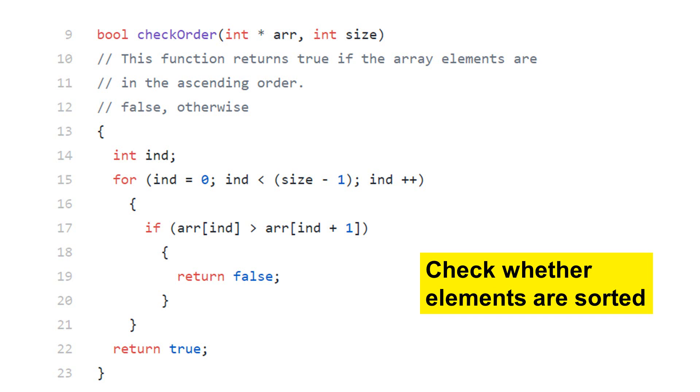By using greater than, this function allows two adjacent elements to be the same. If the iteration goes to the end, the array is in ascending order. The function returns true.